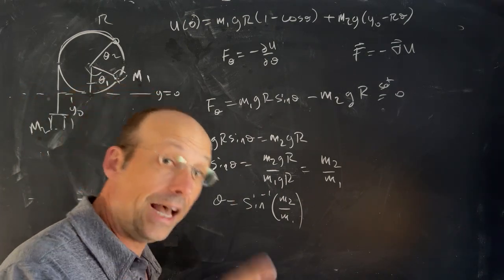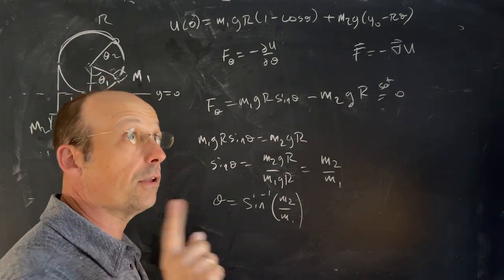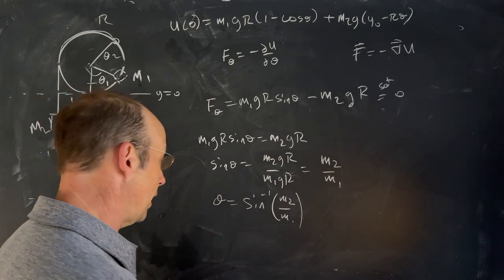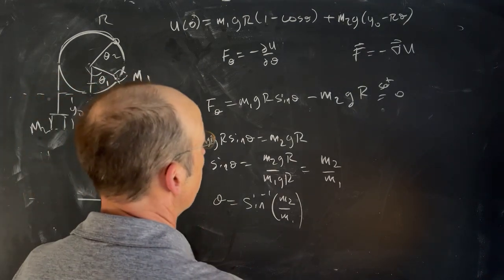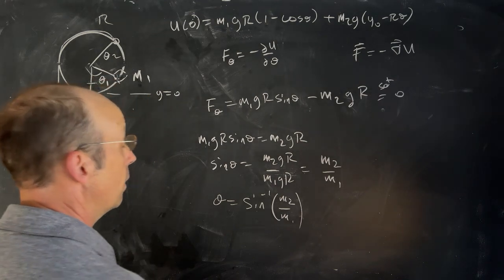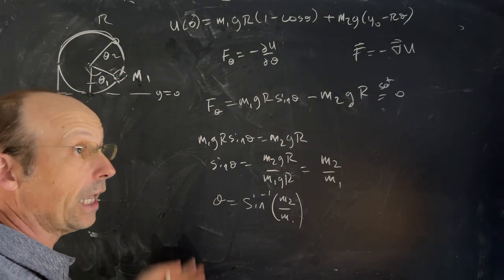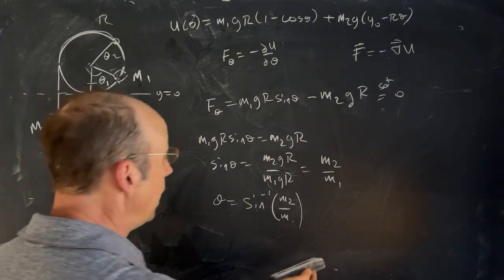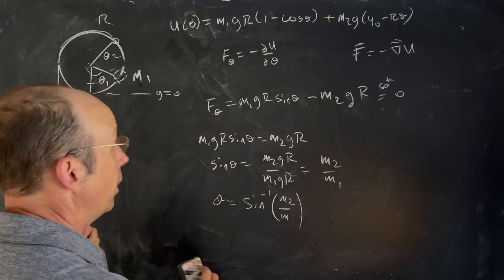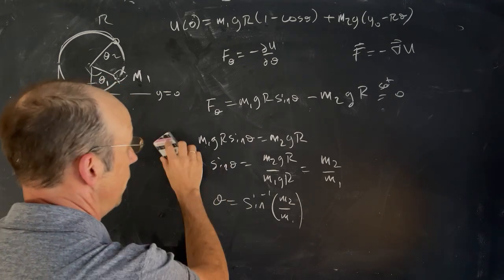But we can test for stability of equilibrium with the second derivative. So the second derivative is going to be equal to, if we have concave up, if the second derivative is positive, it's going to be stable equilibrium.